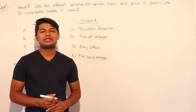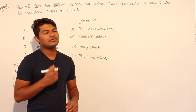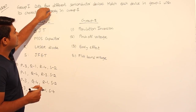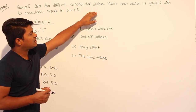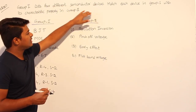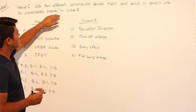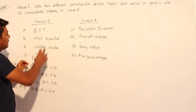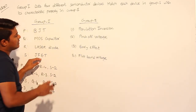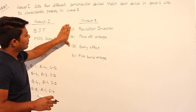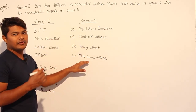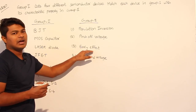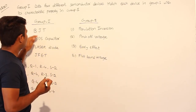This question is given in GATE 2007. Group 1 lists 4 different semiconductor devices; match each device in group 1 with its characteristic property in group 2. Group 1 contains various types of semiconductor devices, and group 2 lists their characteristic features. We need to match these semiconductor devices with their characteristic features.